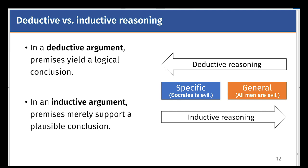Inductive reasoning goes in the other direction. So in a deductive argument, the premises yield a logical conclusion. That is, you start with something, you assume a general statement, and you come up with a specific case. In an inductive argument, the premises merely support a plausible conclusion.